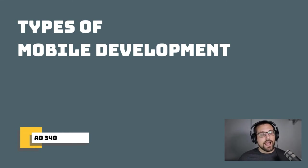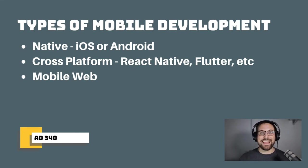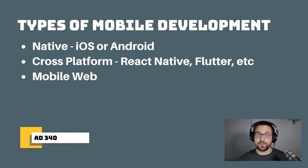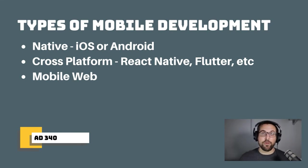Now I want to talk about the different types of mobile app development — really the different technologies used to build them. In a perfect world, any of these technologies would build an app and user experience that was transparent to users; ideally your users shouldn't be able to tell what technology you used to build it. However, that's often not the case. First off we have native app development — iOS development or Android development using the native tooling coming straight from Apple and Google. We also have cross-platform development, using frameworks such as React Native, Flutter, or Xamarin. And then we have the mobile web.